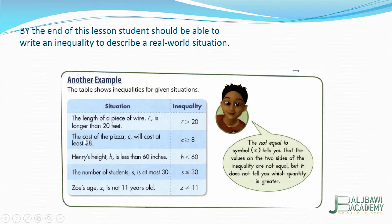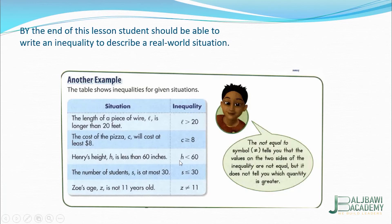Look at the second example: the cost of the pizza C will cost at least $8. When I say 'at least,' it means it can be 8 or more — it should not be less than 8. So 8 is included in the values, and we write C is greater than or equal to 8. Next, the height H is less than 60 inches, so H is less than 60. It can't be 60; it should be less than 60.